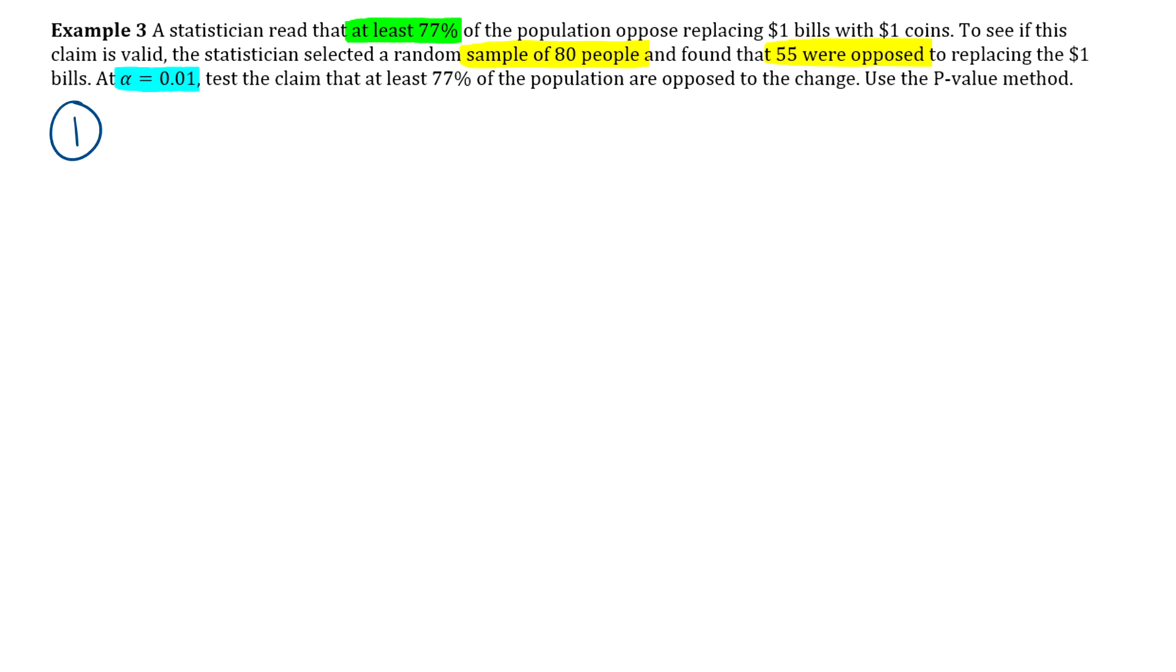So this one is saying that at least 77% is what they think the claim is or what they are claiming. So no matter what, I have to put the equals in the null. This is one of those trickier cases. So I'm going to put p₀ equals 0.77 in the null.